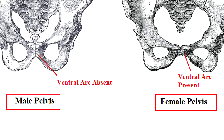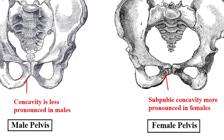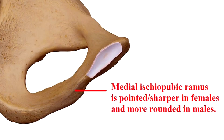Next, we have something called the ventral arc. Females are going to usually have this on the anterior surface of the pubis located inferiorly, which is not going to be typically found on the male pelvis. Another difference is the subpubic concavity, which is a little notched area along the medial edge of the ischiopubic ramus. This is going to be more pronounced in females, especially after the onset of puberty, as compared to the male pelvis. Finally, looking at the medial aspect of the ischiopubic ramus, the ramus comes to more of a pointed edge in females, while in males it's going to be more of a rounded edge.